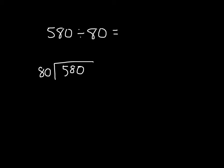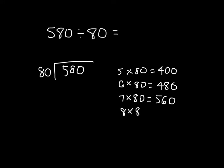80 goes into 580, how many whole times? So we should be thinking about this 8 here and this 58 here, and think about some facts. Now, if we had just chosen 5 times 80, that would be 400. 6 times 80 is 480. 7 times 80 is 560.